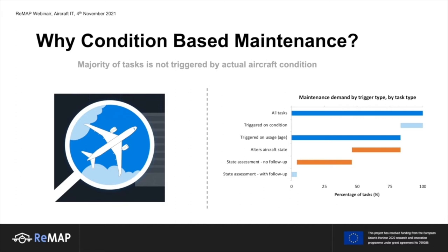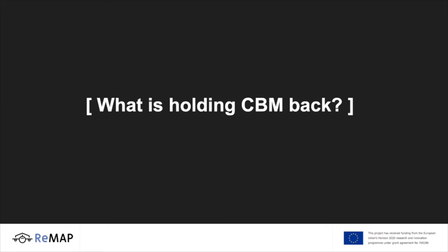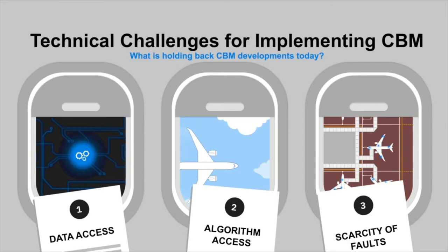But what is holding us back? There are regulatory, operational, and commercial challenges, but I'll mention a couple of technical ones we address in the project. The first has to do with data. Like any airline, we produce massive amounts of data with our flights. But given the sensitive and commercially valuable nature of that data, it's pretty difficult for us to publish that data to the outside world.